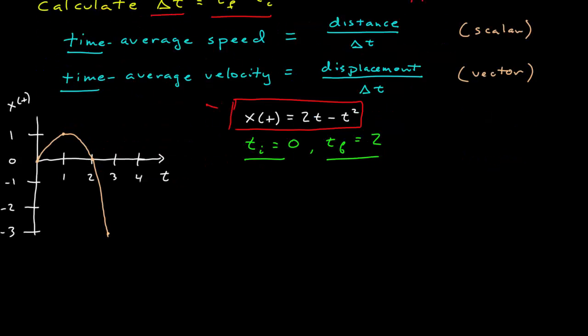All right, for the example, I've brought this position function, x(t) is equal to 2t minus t squared. And over here, now I have a graphical representation of this function between 0 and 3 seconds. It goes from 0 up to positive 1 meter, having meters and seconds, and then it comes back through 0, and then down to negative 3. If I'm interested in two points in time, t is equal to 0, and t is equal to 2 seconds. What is the time average speed and velocity?